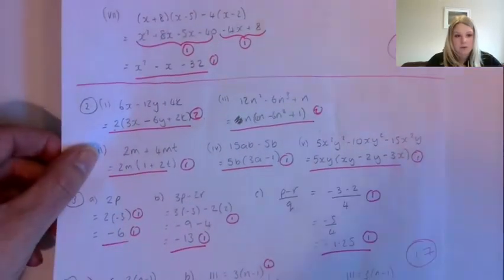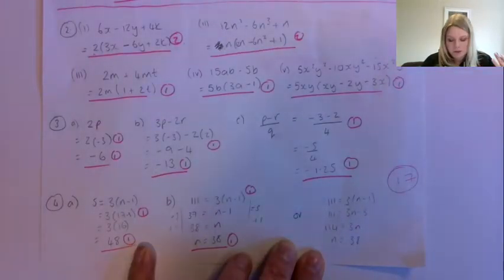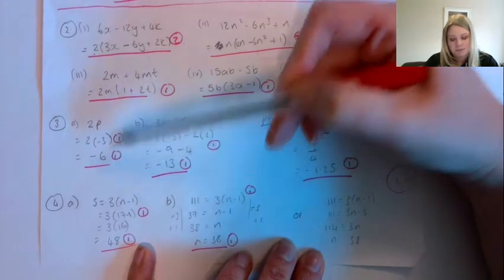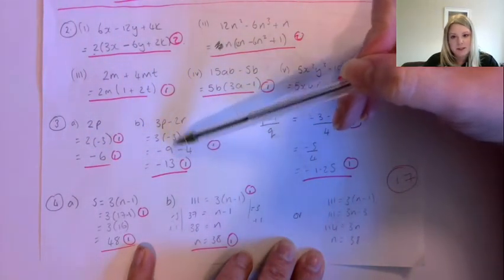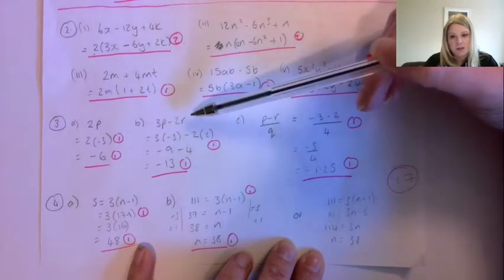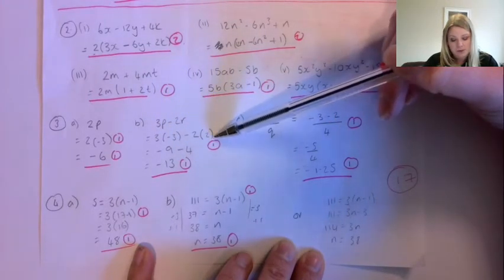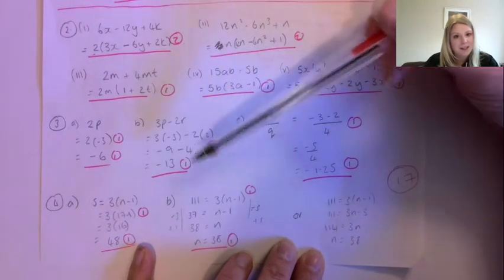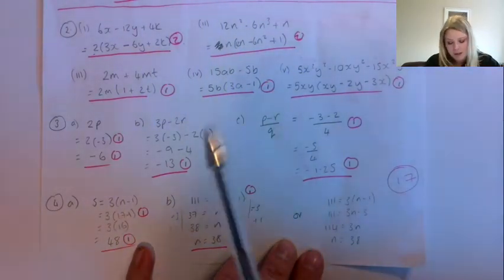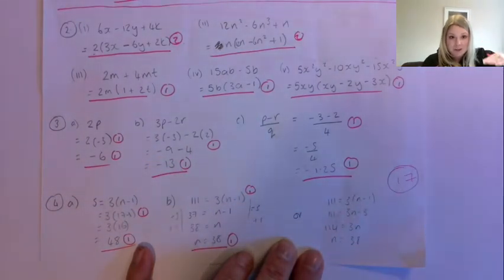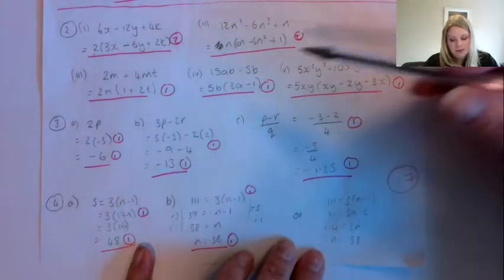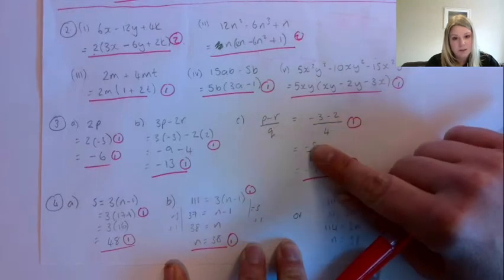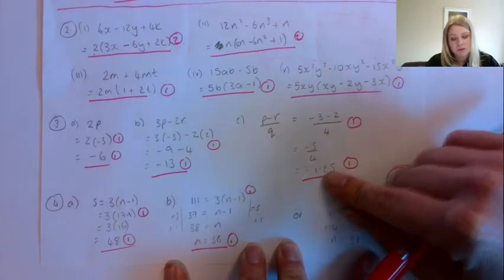Question 3 was substituting values into equations. So for 2p, where p equals minus 3: 2 multiplied by minus 3 gives minus 6. For 3p minus 2r, we substitute p equals minus 3 and r equals 2: 3 times minus 3 gives minus 9, and minus 2 times 2 gives minus 4. A lot of people got to that stage and then made a silly mistake — minus 9 take away another 4 gives minus 13. For (p minus r) all over q: minus 3 minus 2 gives minus 5, divided by 4 gives minus 1.25.